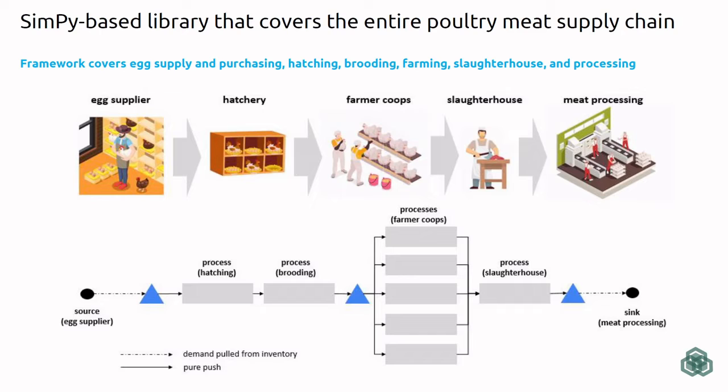Here there are also defined growth rates, feed rates, and mortality rates that are included by the library and can be used for modeling the farming process or the growth of the flocks. The slaughterhouse itself produces onto stock and has a defined production capacity. Eventually we have the meat processing process, which is basically the consumption of the carcasses from the slaughterhouse inventory. The meat processing plant will then downstream sell to distribution facilities, markets, and so on.